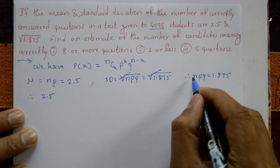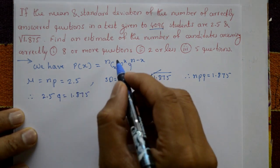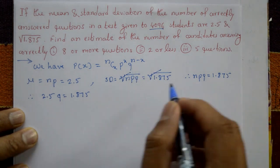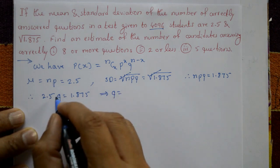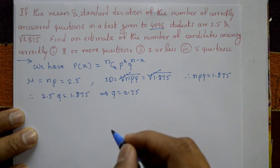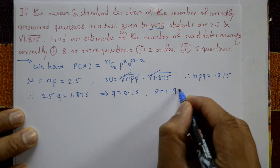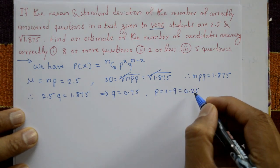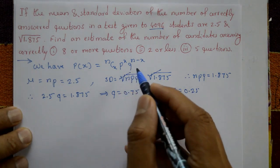Since np = 2.5 and npq = 1.875, we get q = 1.875 / 2.5 = 0.75 = 3/4. Therefore p = 1 − q = 0.25 = 1/4.